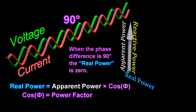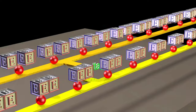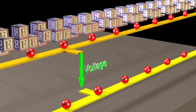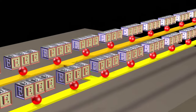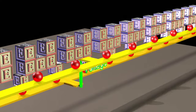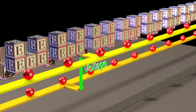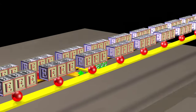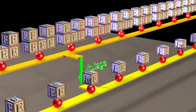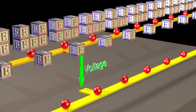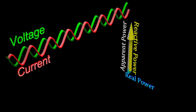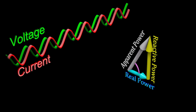When the phase difference is 90 degrees, the real power is zero. Without changing the magnitude of the current or the magnitude of the voltage, we can increase the net flow of energy by making the voltage and the current more in phase with each other.